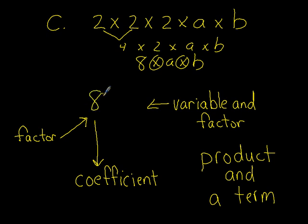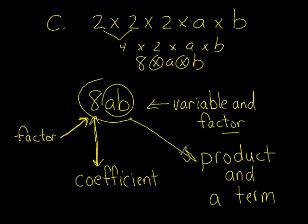And we end up with 8AB. So this time we have our factor, our coefficient, and we have two variables here, which are variables and factors. The whole term together, once again, is the product and a term.